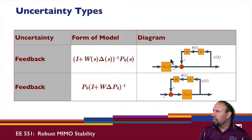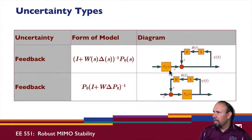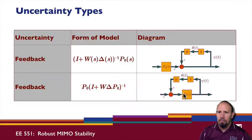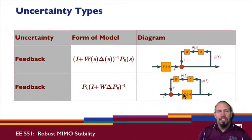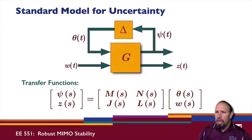Here is another feedback form: instead of having the plant following the uncertainty, the uncertainty part follows the plant. This feedback form creates a loop around our plant. These are the standard, or typical, forms for uncertainty.